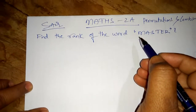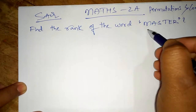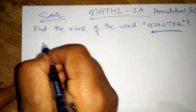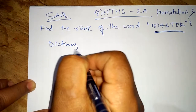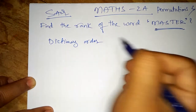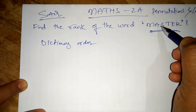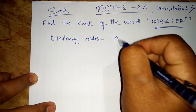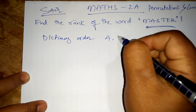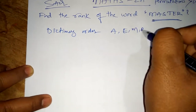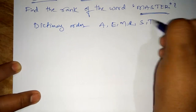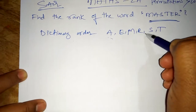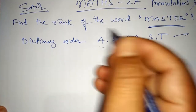First, we need to arrange the letters of MASTER in dictionary order, which means alphabetical order. The six letters are A, E, M, R, S, T — arranged alphabetically.